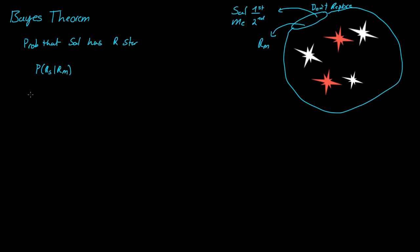Now, how do we solve this? Usually we can just think through a given problem. We can think: what's the probability of me getting a red star, given that Sal got a red star? Well, if Sal got a red star, that means we just take out one red star, and that gives us one remaining red star out of the four possible stars. So it's one-fourth. But we can't do that with this problem.